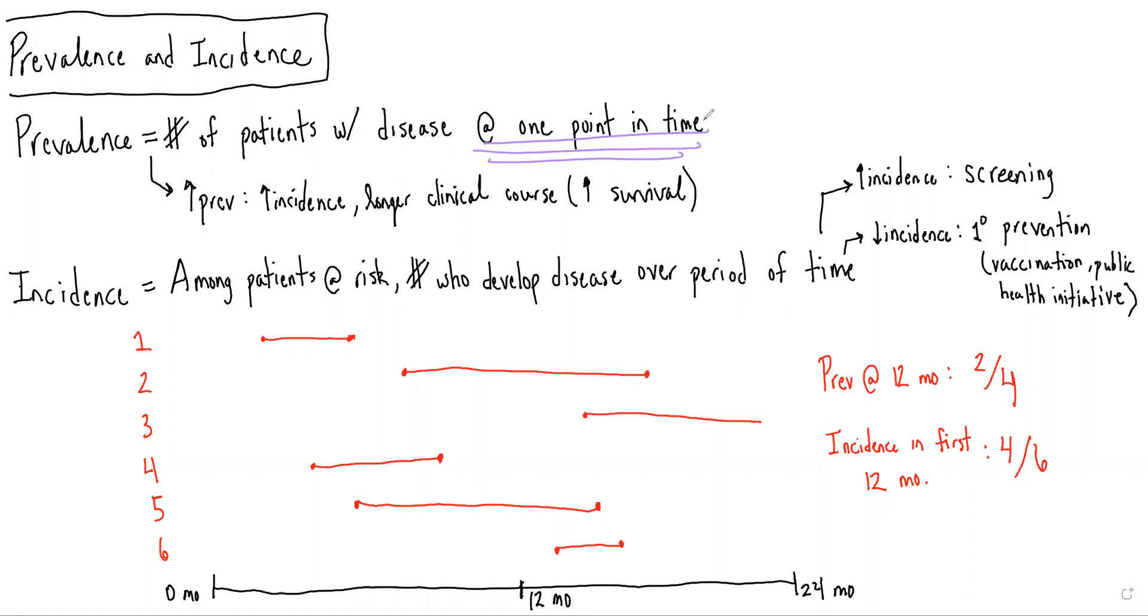One way that they'd like to test prevalence and incidence is asking how a certain change to the disease management or some aspect of the population will change prevalence and incidence. Importantly, the things that will increase prevalence are an increase in incidence, so an increase in the number of new cases, or a longer clinical course, such as a new medication that improves survival will lead to more patients with the disease living longer and therefore a larger prevalence.